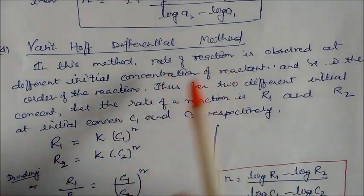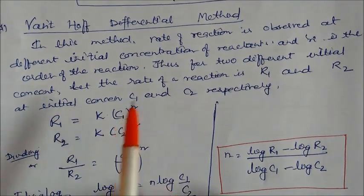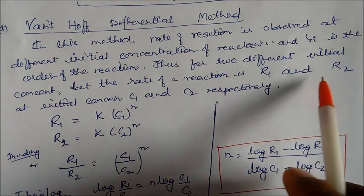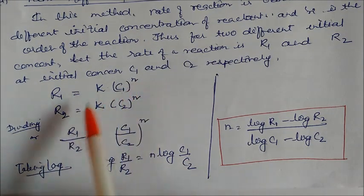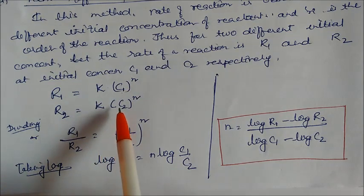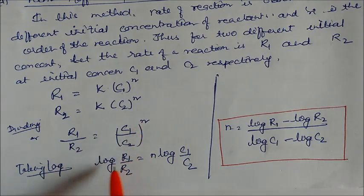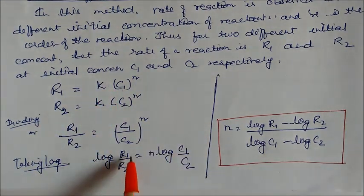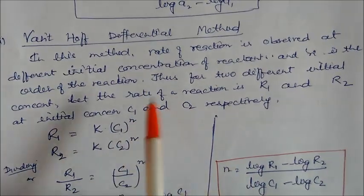The next method is Van't Hoff's differential method. The rate of reaction is observed at different initial concentrations of reactants. For two different initial concentrations, let the rates be r1 and r2 and concentrations c1 and c2 respectively. Then r1 equals k·c1^n and r2 equals k·c2^n. Dividing and taking log gives n equal to (log r1 minus log r2) divided by (log c1 minus log c2).